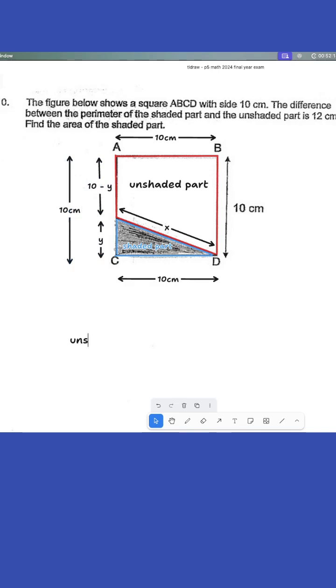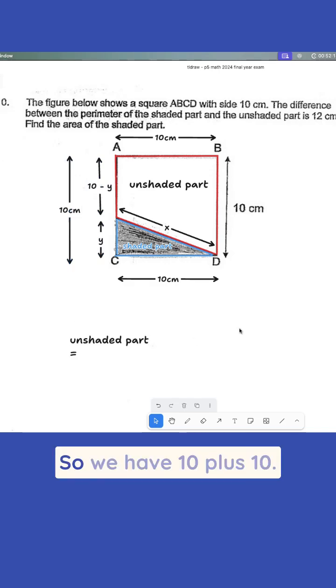So the unshaded part is equal to, so we have 10 plus 10. So I'm going to 10 plus 10. Unshaded part, 10 plus 10 plus 10 minus Y plus X. So I'm going to write down.